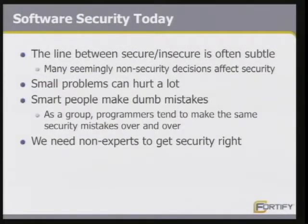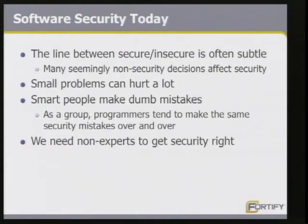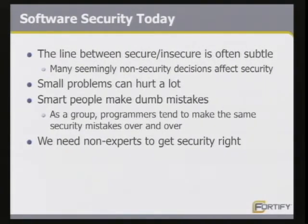The state of software security today: the line between a secure system and an insecure system is quite narrow and hard to find at times. It's not the case that a system is either secure or insecure — it's often in the gray area in between. Small problems — even one vulnerability in an otherwise completely secure system — can put you on the cover of the Wall Street Journal. Smart people make dumb mistakes. As programmers, we are smart people who solve difficult problems, but we are apt to make the same mistakes again and again. That's what we see from the security perspective, and that's one of the things that static analysis and other security tools can help resolve. We need to help security practitioners get those security decisions right, and tools are a big part of that.